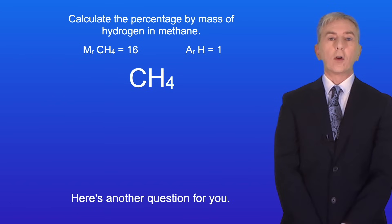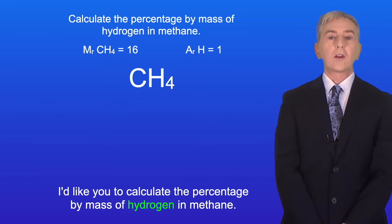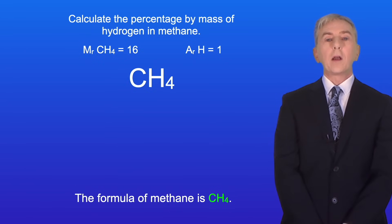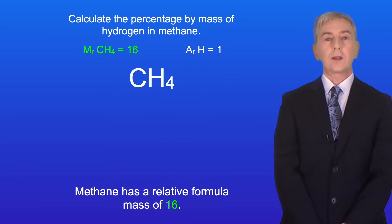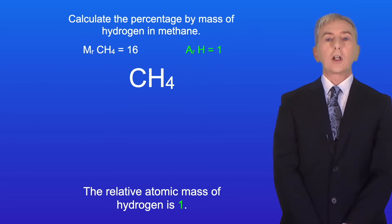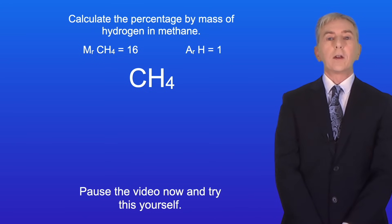Here's another question for you. Calculate the percentage by mass of hydrogen in methane. The formula of methane is CH₄ and methane has a relative formula mass of 16. The relative atomic mass of hydrogen is 1. Pause the video now and try this yourself.